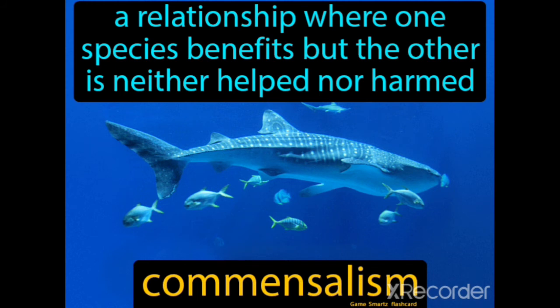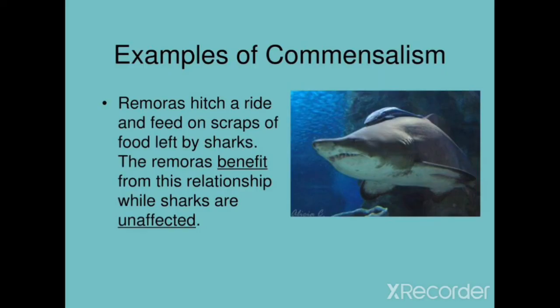In commensalism, one organism gets a benefit while the other organism has neither benefit nor harm. For example, remoras attach to a shark and feed on the scraps of food left by the shark. The remora benefits, while the shark is neither harmed nor helped.